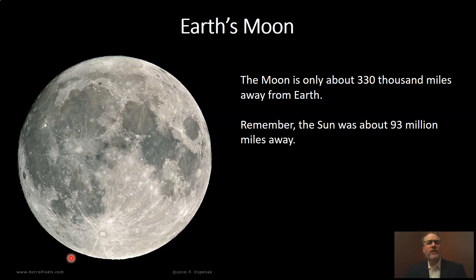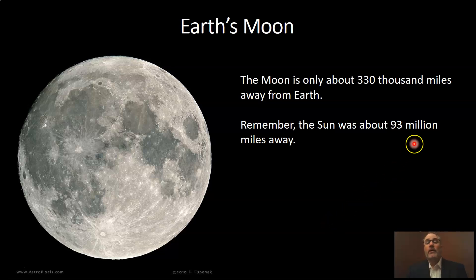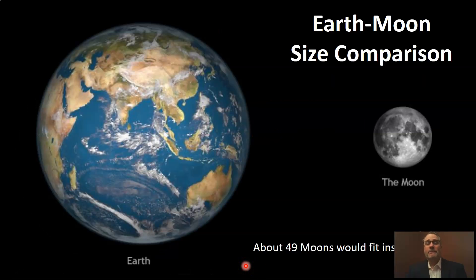Let's look a little bit more at Earth's moon. It's considerably closer — only about 330,000 miles away. This is the closest large object to Earth in its orbit. The moon is orbiting around the Earth, which is in turn orbiting around the sun. 330,000 miles is a pretty long way, but remember it's much closer than the sun's 93 million miles. If we look at a size comparison, the moon and Earth are comparable. It turns out you could fit about 49 moons inside of the Earth — the moon is considerably smaller, but not as drastic a difference as we see otherwise.